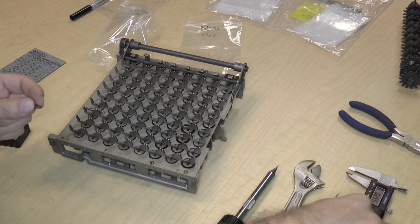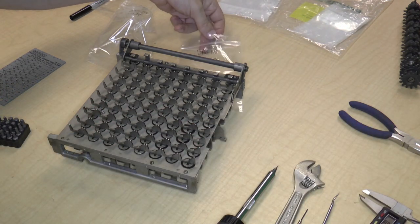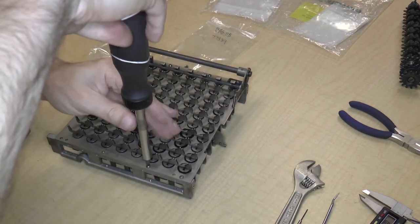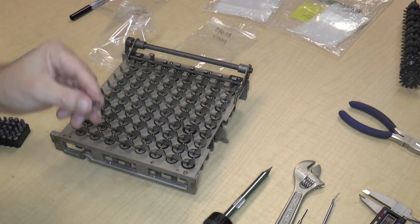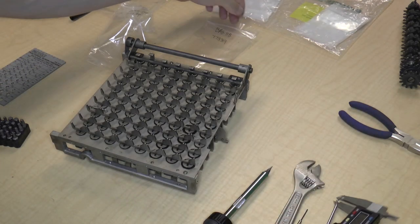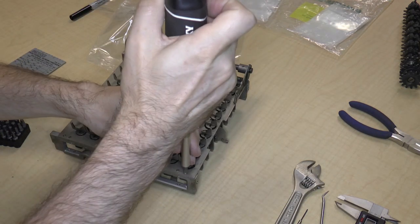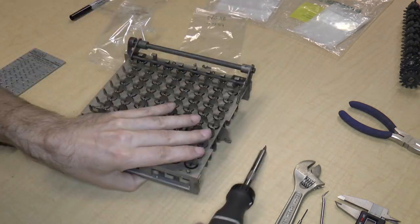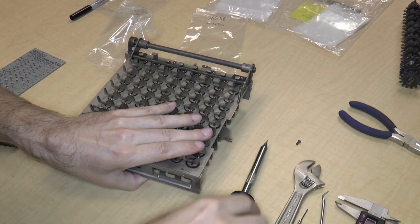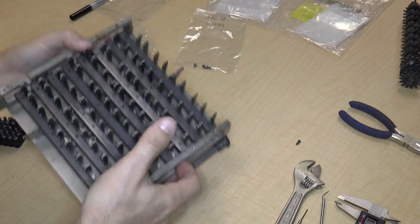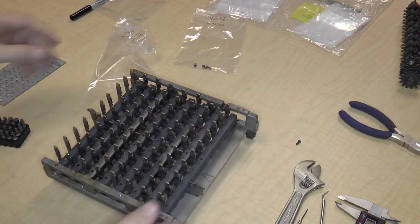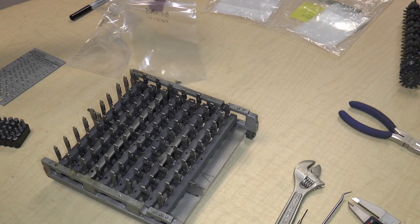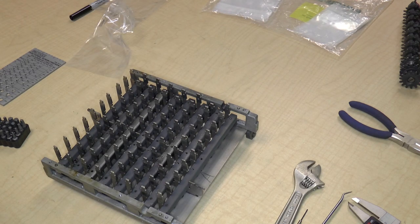So we'll remove the other screws. I can tell that this is 4-40, same size, quarter inch. Same size, quarter inch. And the final bit. I'm going to hold on to the frame while I do this. Set the screw aside. And then I'm going to turn the assembly over.